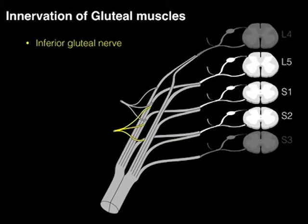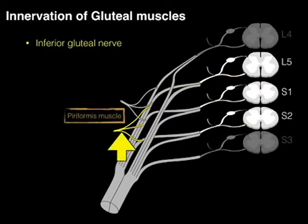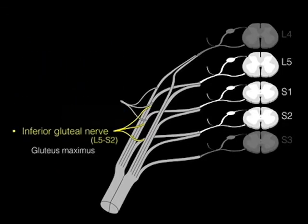The inferior gluteal nerve arises from L5 to S2 levels. The motor neuron cell bodies arise in the ventral horn of the spinal cord, exit via the ventral rami, and travel into the inferior gluteal nerve. This nerve innervates only one muscle — the gluteus maximus. It gets its name because it exits below the piriformis muscle to reach the gluteus maximus.